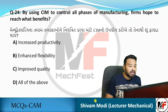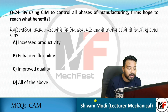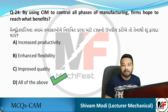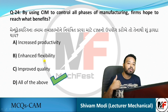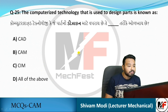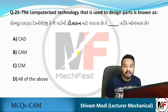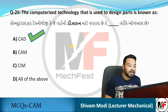By using CAM to control all phases of manufacturing, firms hope to gain: increased productivity (output upon input), enhanced flexibility (ability to manufacture a variety of products), and improved quality. The computerized technology used to design parts is known as CAD — Computer Added Design.